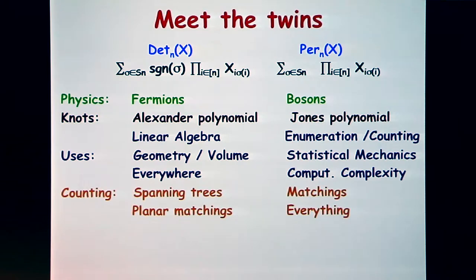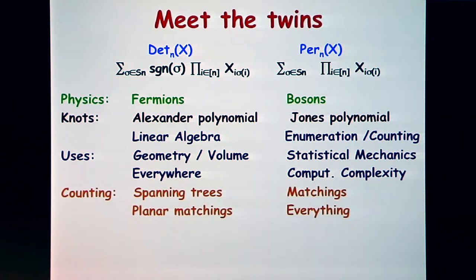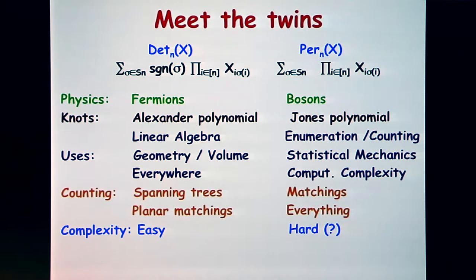Both count things, but the determinant counts simple things, like the number of spanning trees of a graph or the number of planar matchings in planar graphs. The permanent, more or less by definition, counts the number of perfect matchings in a graph, and it actually is the ultimate counting problem — it captures all counting problems you can imagine. The main dichotomy is computational: the determinant is easy to compute, whereas the permanent we think is very hard.